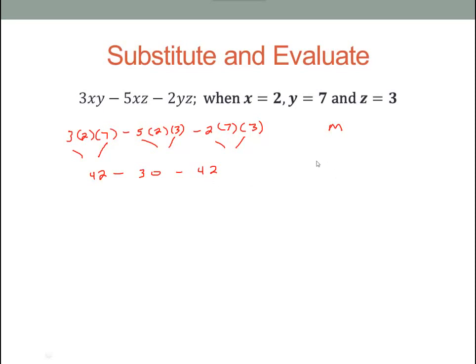So now we will subtract. 42 minus 30, that will give us 12. And then we will subtract again. So we have 12 minus 42. So we start off with 12 and we spend 42 dollars. So we overspent by 30, so we're at negative 30 dollars.